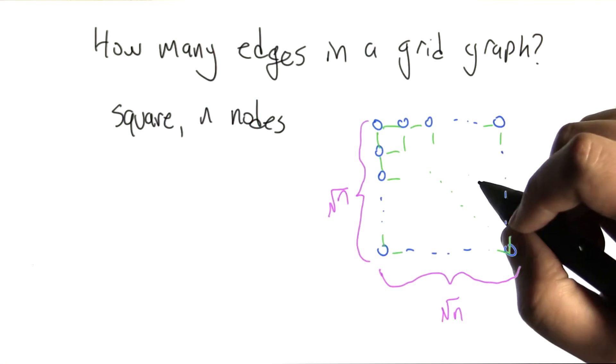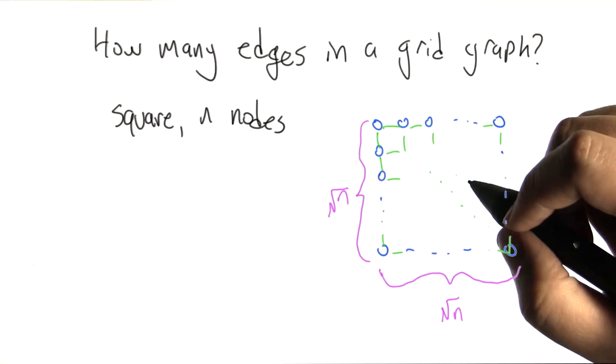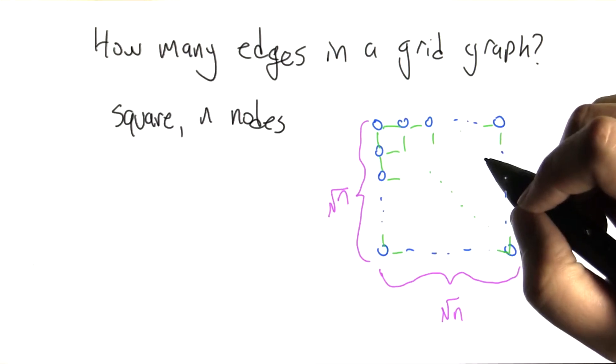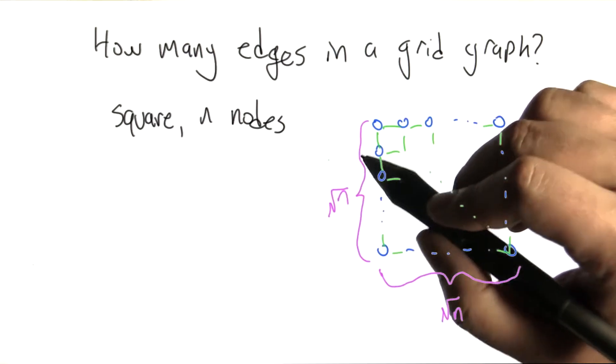So it would be nice to be able to answer this question in a little bit more generality. So how many edges do we have in a grid graph? And we're assuming that there are n nodes and the nodes are arranged in a square.